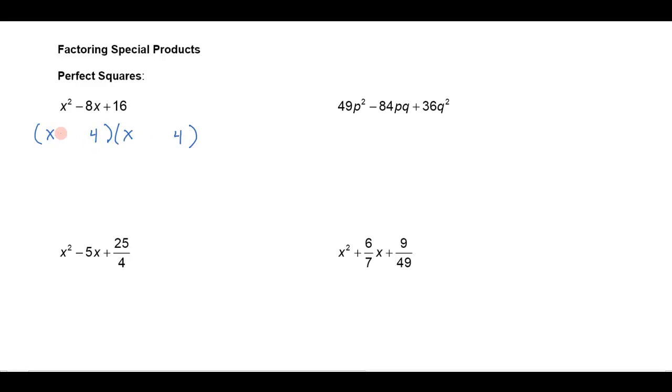So I factor and I notice that x and x will give me x squared, and the square root of 16 is 4, and 4 and 4 here does give me an 8 in the middle. I need both of these to be minus, so double check everything. Negative 4x, negative 4x is negative 8x plus 16, and I can just do a little extra step here, just write it as a perfect square.